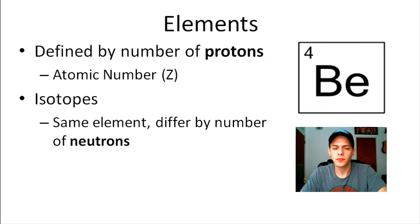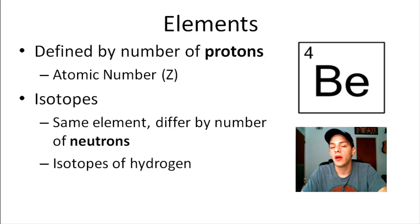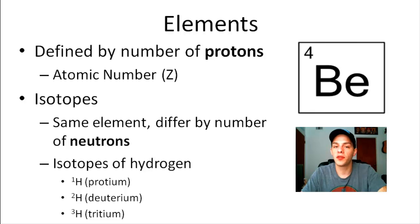So a good example of isotopes is the three naturally occurring isotopes of hydrogen, which are protium, which has one proton and no neutrons, deuterium, which has a proton and a neutron, and then tritium, which has a proton and two neutrons. And all of these, protium, deuterium, and tritium, they all have one electron. So they're all charge neutral. They cancel out with that one proton. But again, they differ in the number of neutrons.